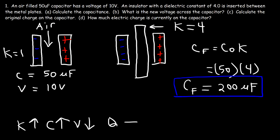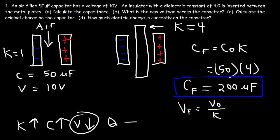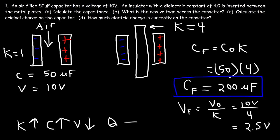Now what about the voltage? What is the new voltage across the capacitor? To calculate the new voltage, it's going to be the original voltage divided by K, because it's going to decrease. The original voltage was 10 volts and K is 4. 10 divided by 4 is 2.5 volts. So that's the new voltage across the capacitor.